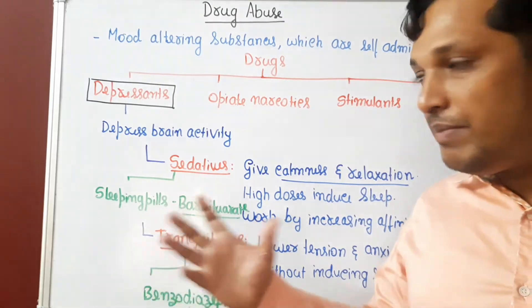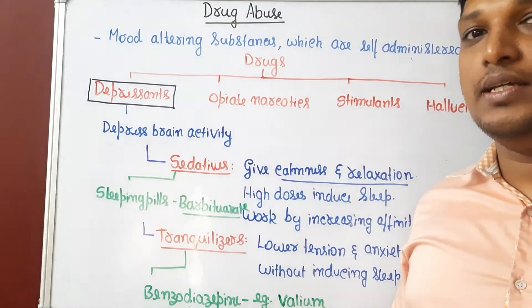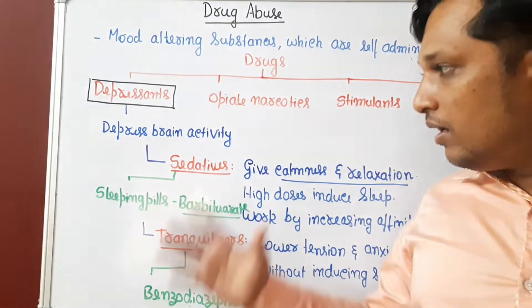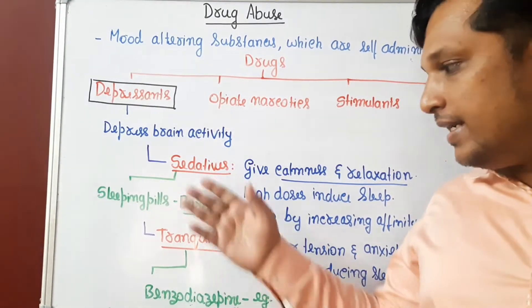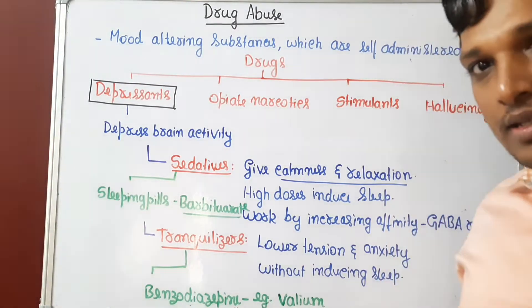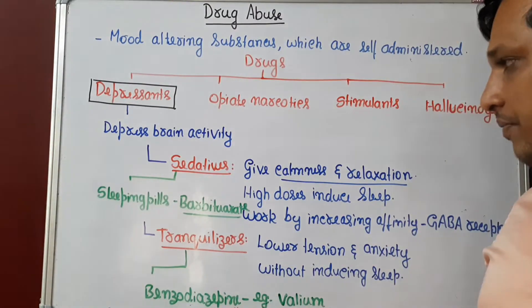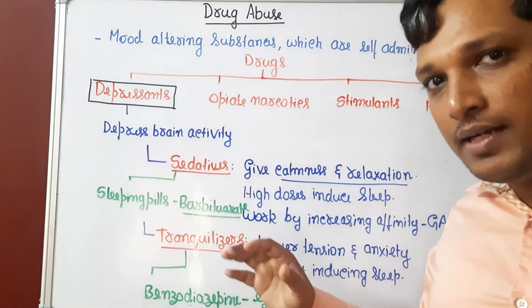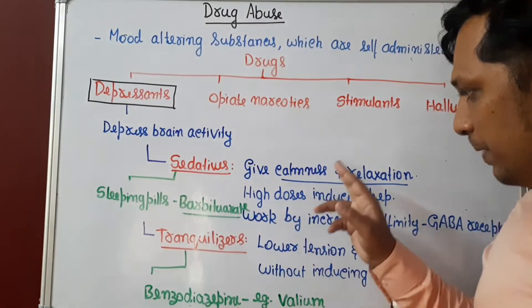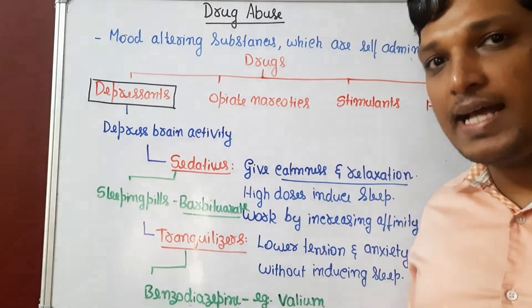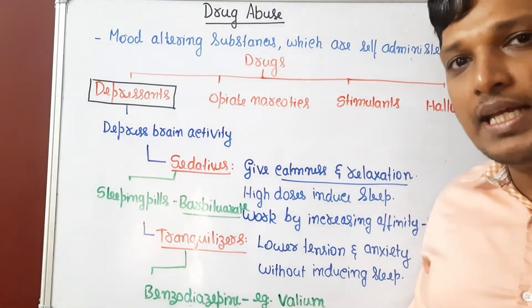As the name itself indicates, depressants depress the brain activity. There are two groups of depressants: sedatives and tranquilizers. What is the difference between a sedative and a tranquilizer? A sedative is a depressant which, when taken, will bring about calmness and relaxation of the central nervous system. Who will be taking it?